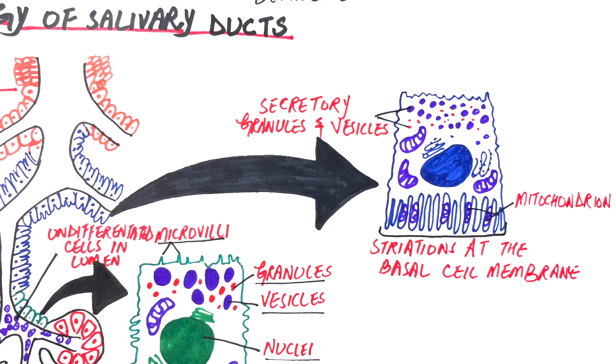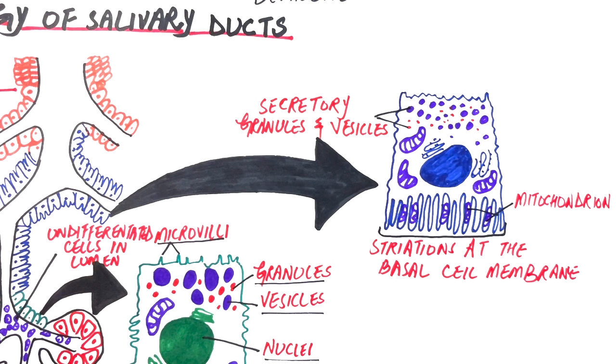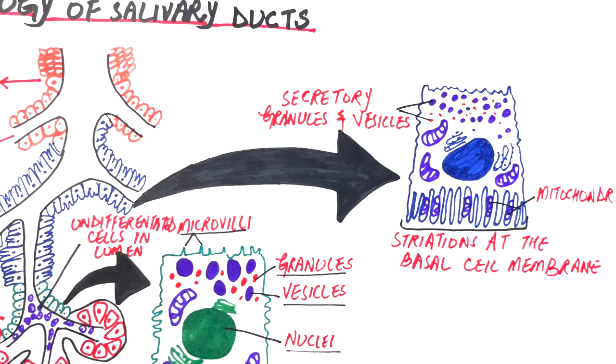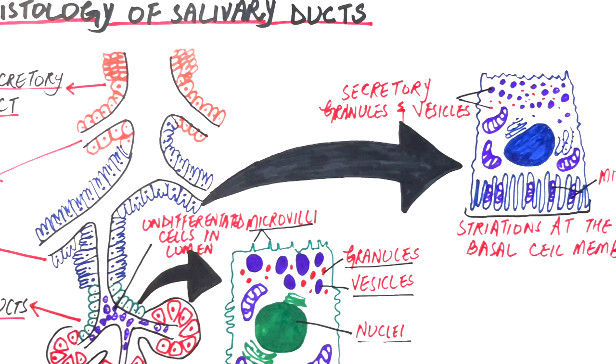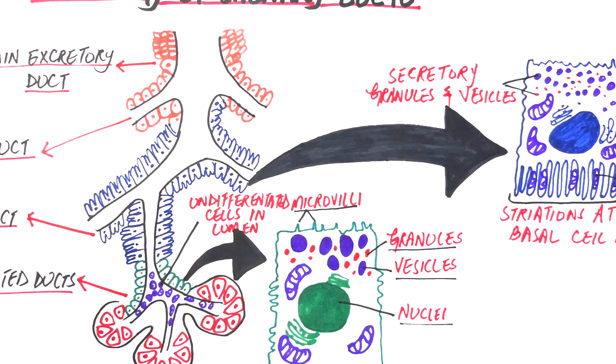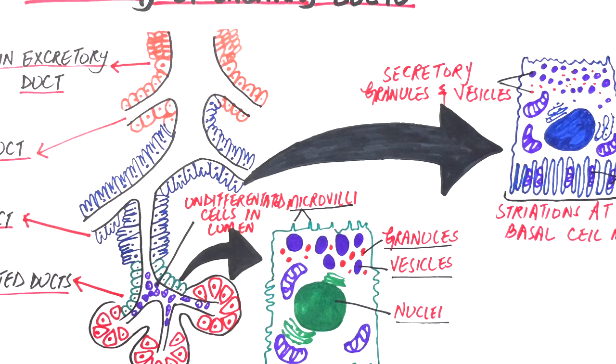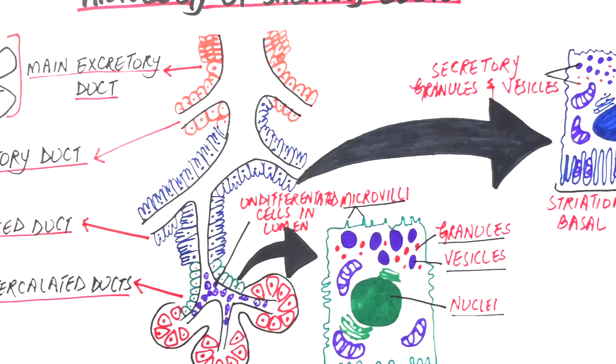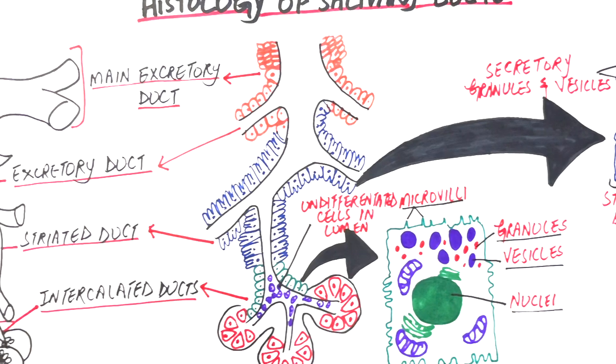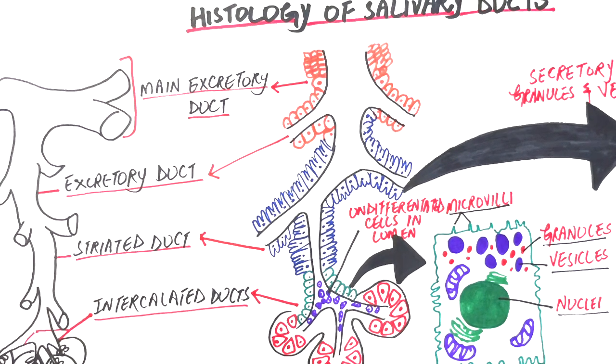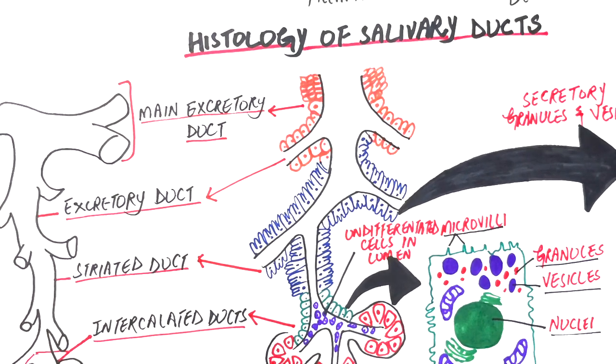Moving away to the excretory ducts, the excretory ducts have the largest diameter of all ducts. They are located either within the connective tissue septa between the lobules of the glands, hence occupying an interlobular location where they are mostly smaller in size, or they are located outside the lobes and occupy an extralobular location in the form of the main excretory duct.